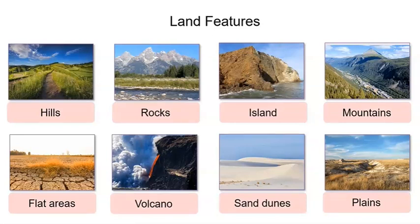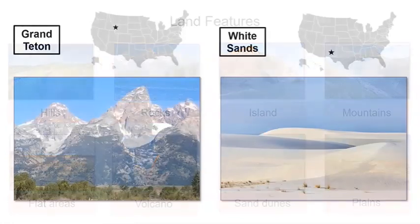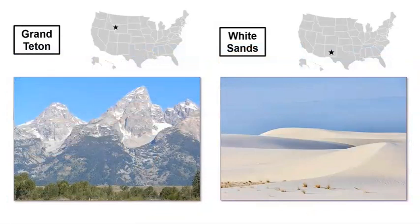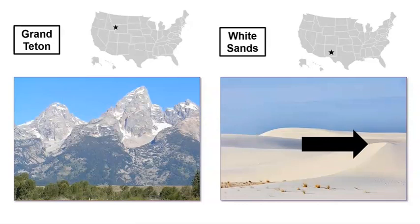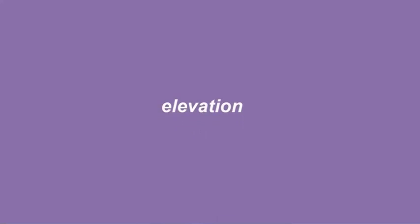What questions do you have about the shape of land? I have a question: how are the shapes of landforms at Grand Teton and White Sands different? Grand Teton has very tall mountains — do you see how big the mountains are compared with the trees in front of them? But the sand dunes at White Sands are not as tall; in fact, they are very small. How can we describe these differences in height? We can use the term elevation. Elevation is a measure of height above sea level. The mountains at Grand Teton have a high elevation and the sand dunes at White Sands have a low elevation.